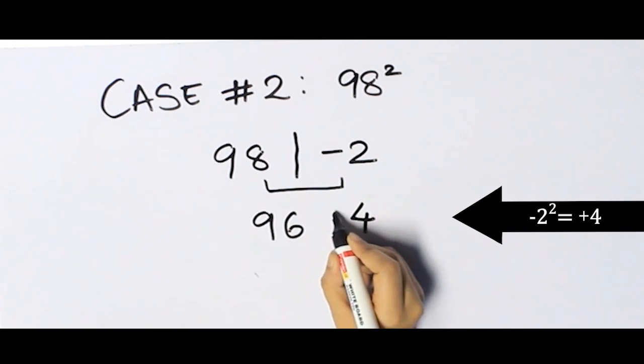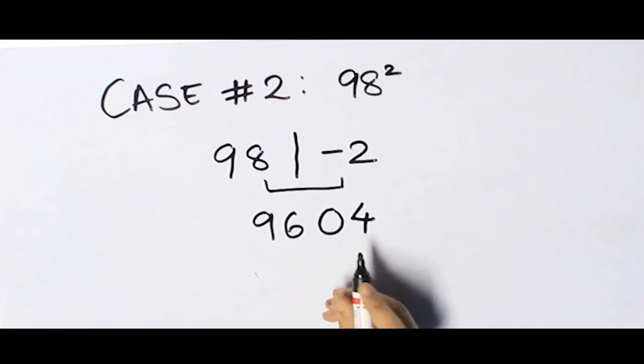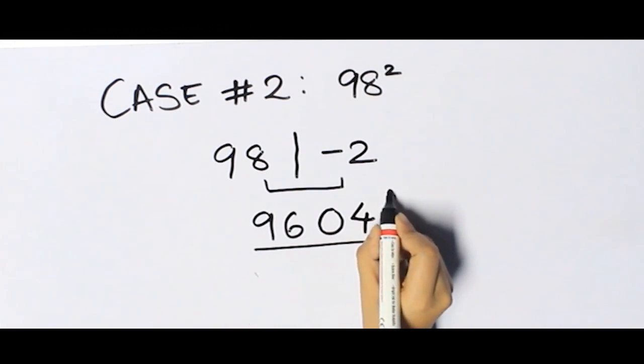But we need a two-digit number, because of which we'll write 04. Hence, 9,604 is the square of 98.